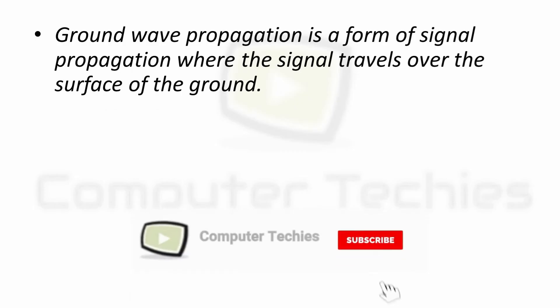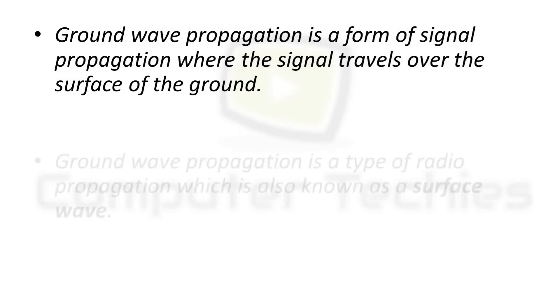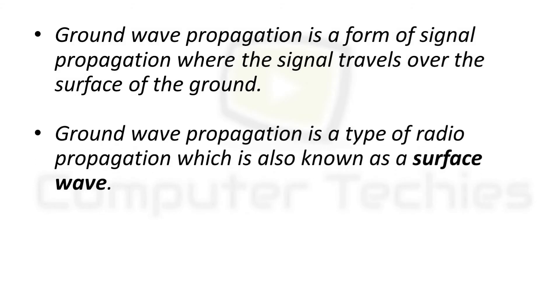Ground wave propagation is a form of signal propagation where the signal travels over the surface of the ground. Ground wave propagation is a type of radio propagation which is also known as a surface wave.